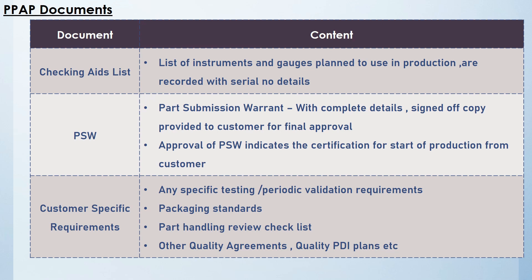We have seen the 18 documents. Apart from these, there is a 19th general requirement based on customer-specific needs. These may include packaging standards, specific and periodic validation requirements, part handling review checklists, quality agreements, purchasing agreements, final PDA plans, and quality plans. These are all under customer-specific requirements and may not apply to every case, but based on the customer, specific requirements must be fulfilled and recorded along with the other 18 documents.